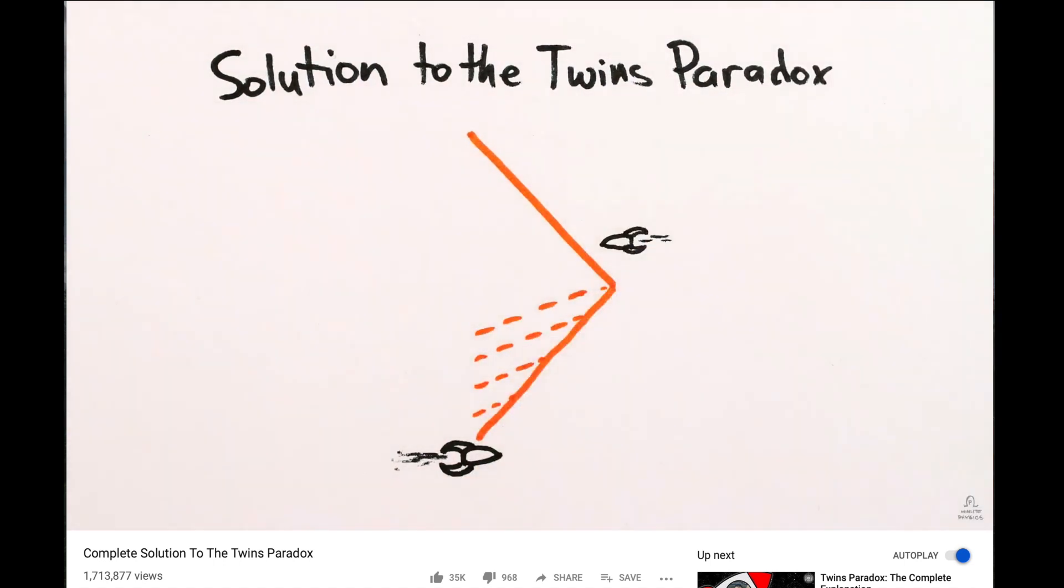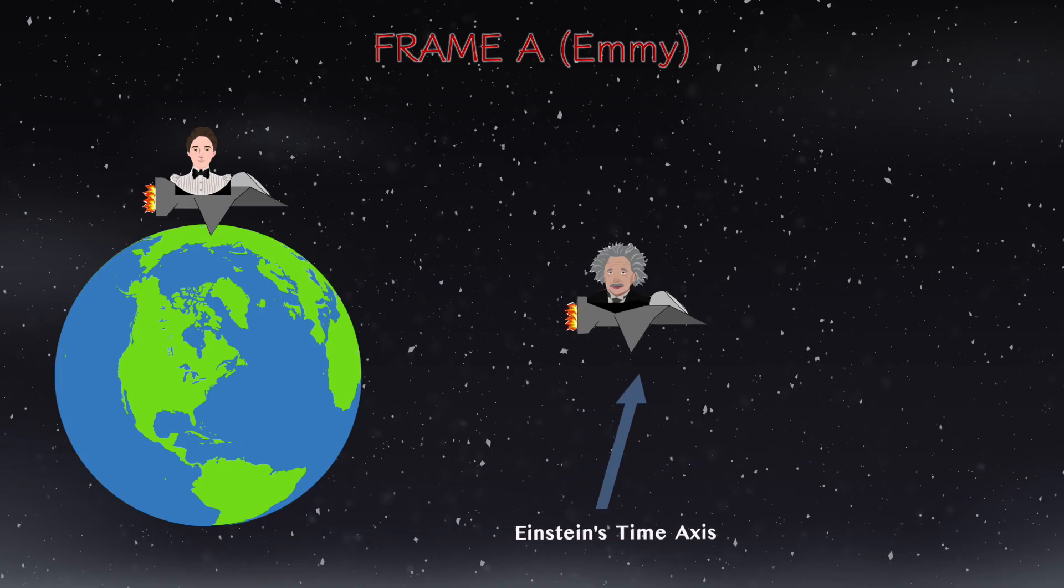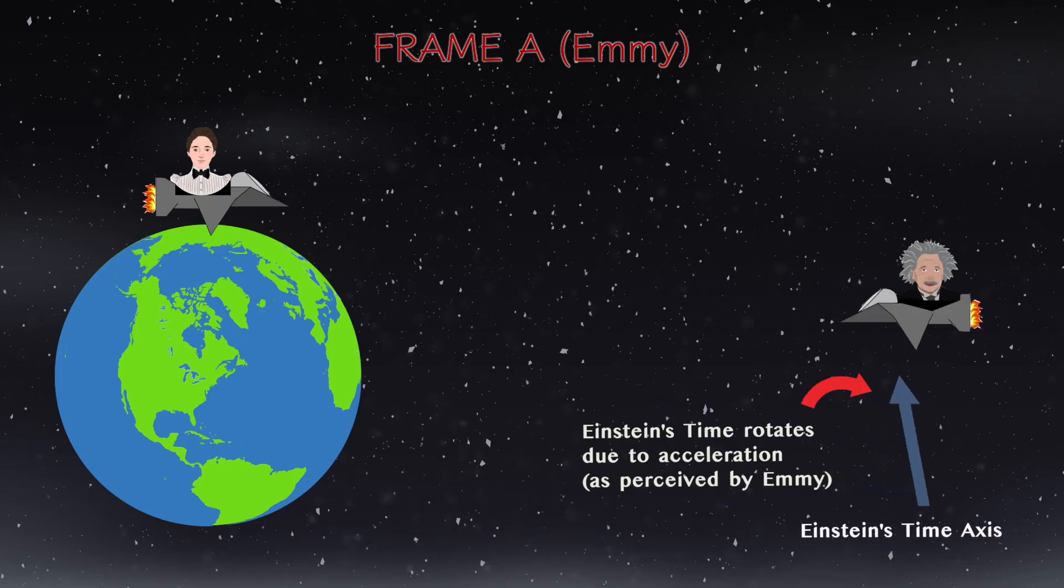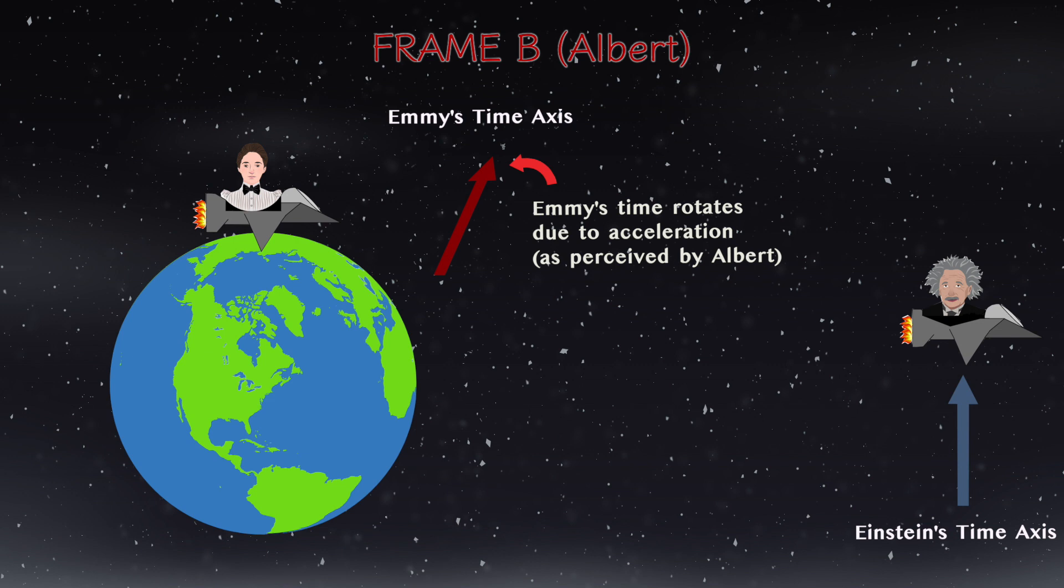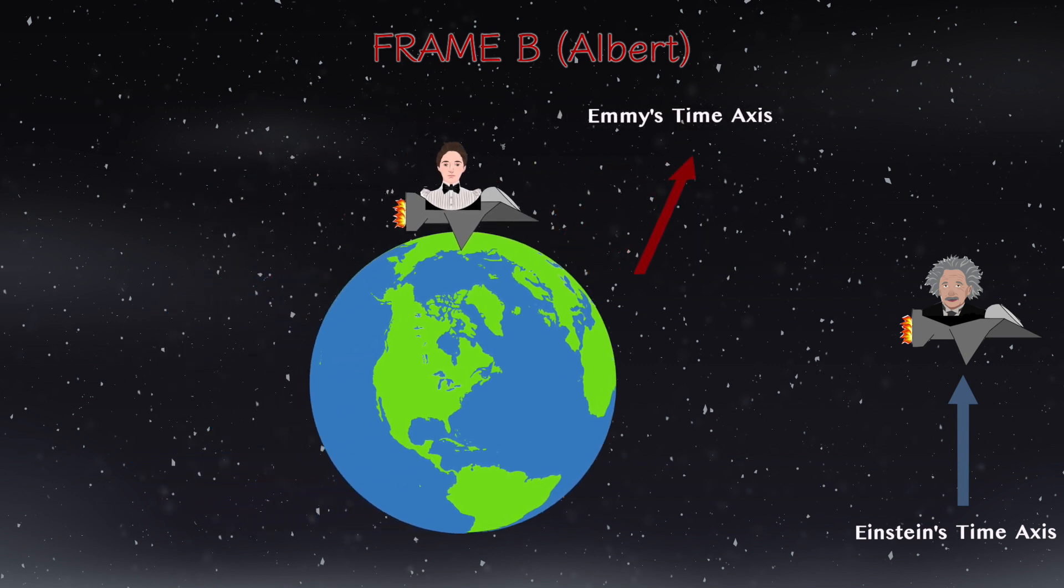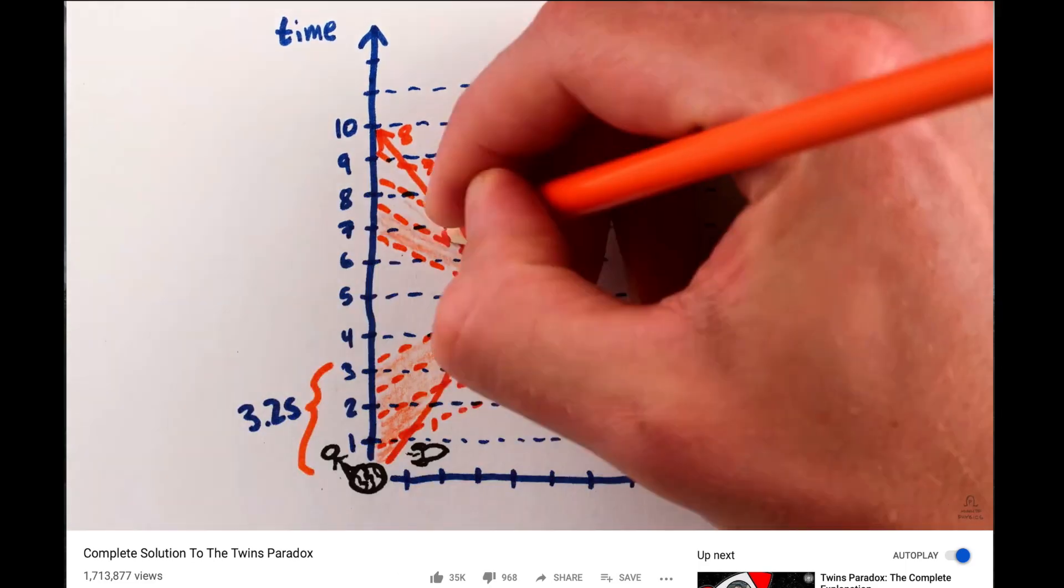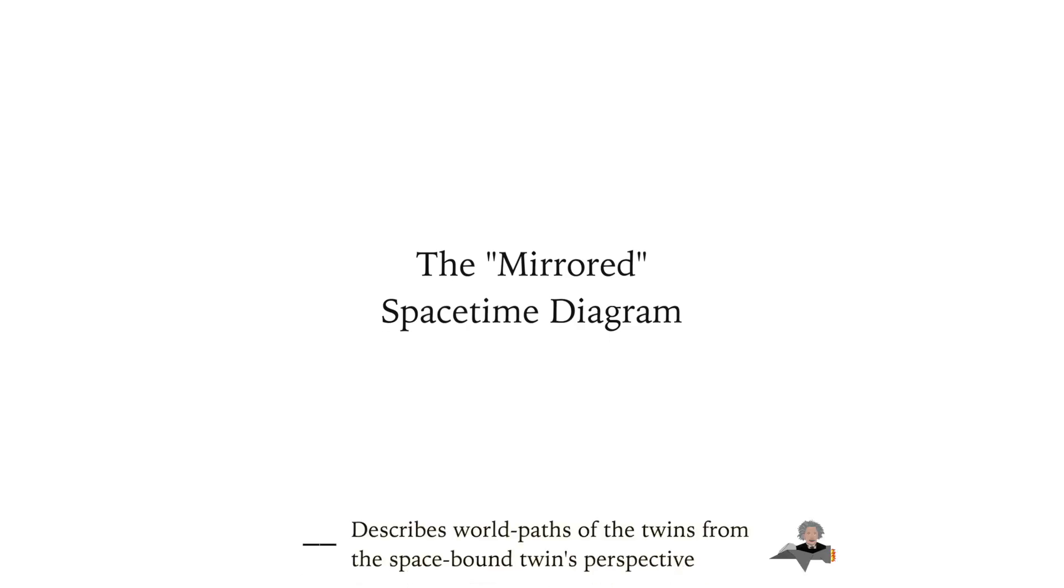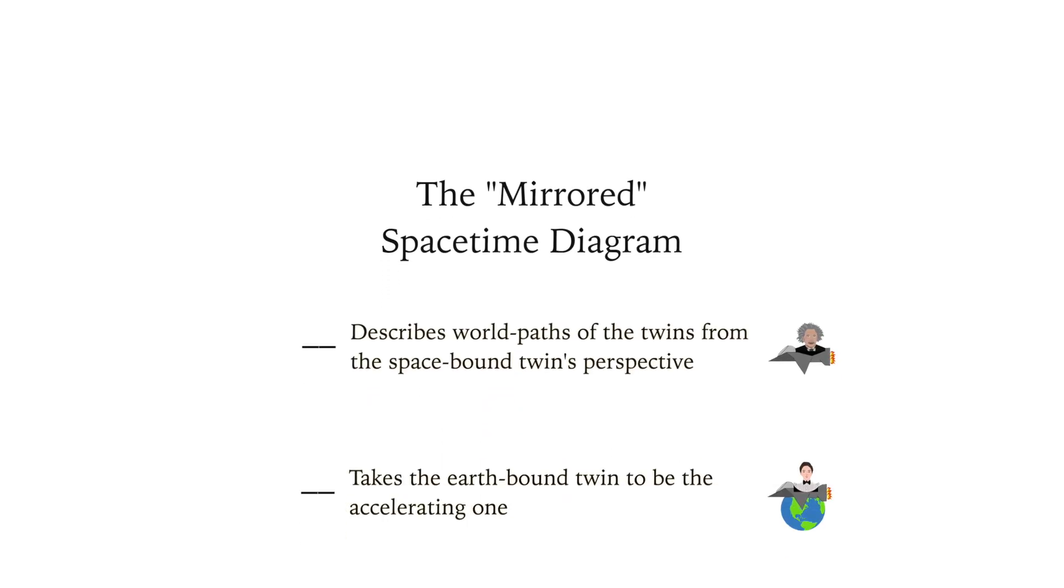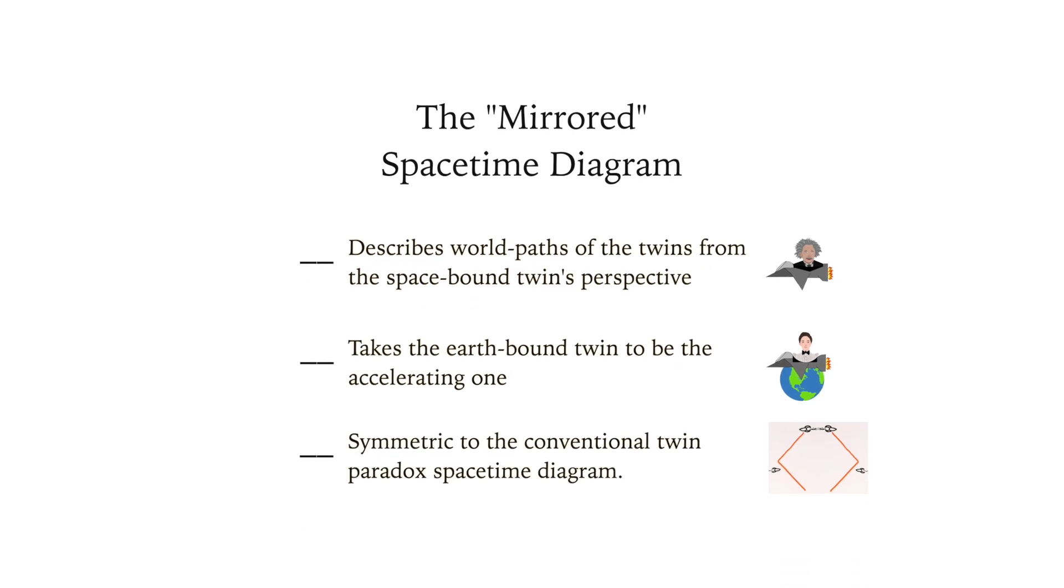But the hitch is this: this time is only missing if both twins agree that it is the space twin who turns around or accelerates. Acceleration is the necessary condition in order for the space twin's notion of time to rotate. This means that if the space twin asserts that the Earth twin turns around, it'll be the Earth twin whose notion of time rotates, and who thus experiences the missing time.